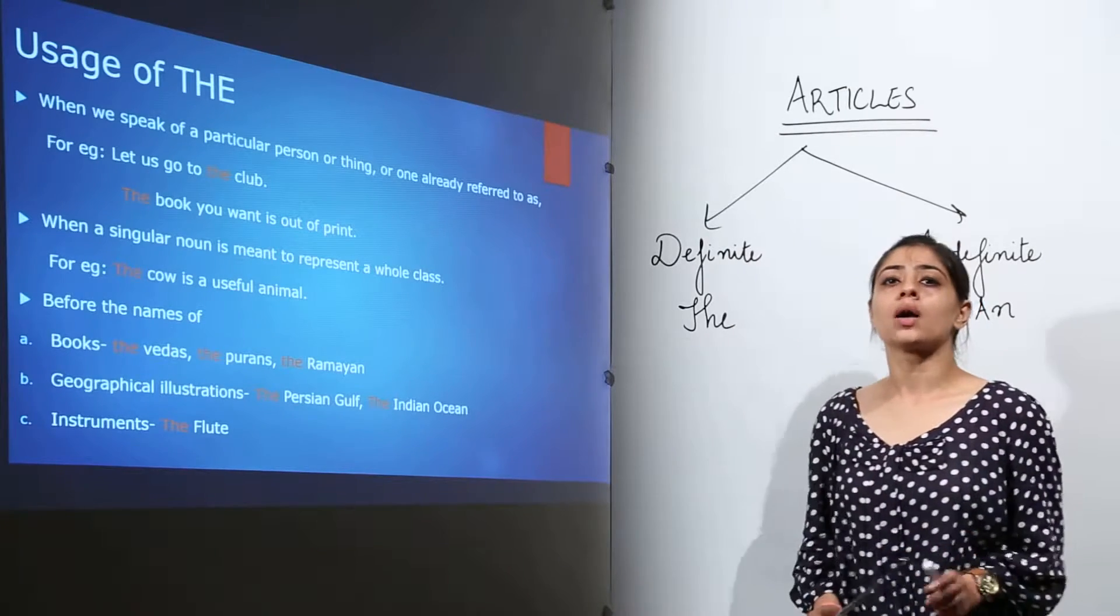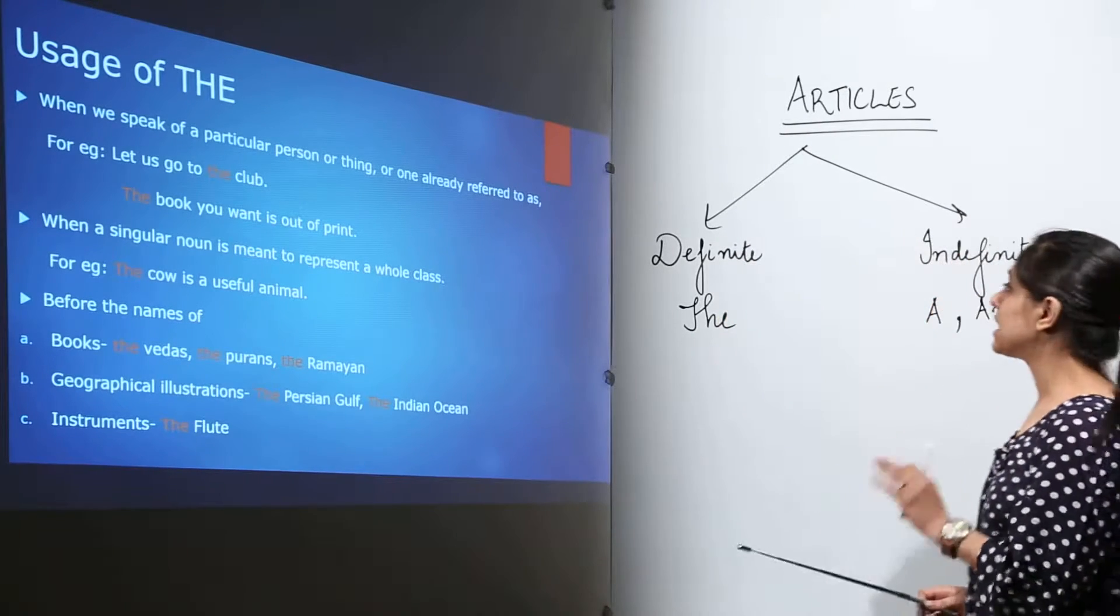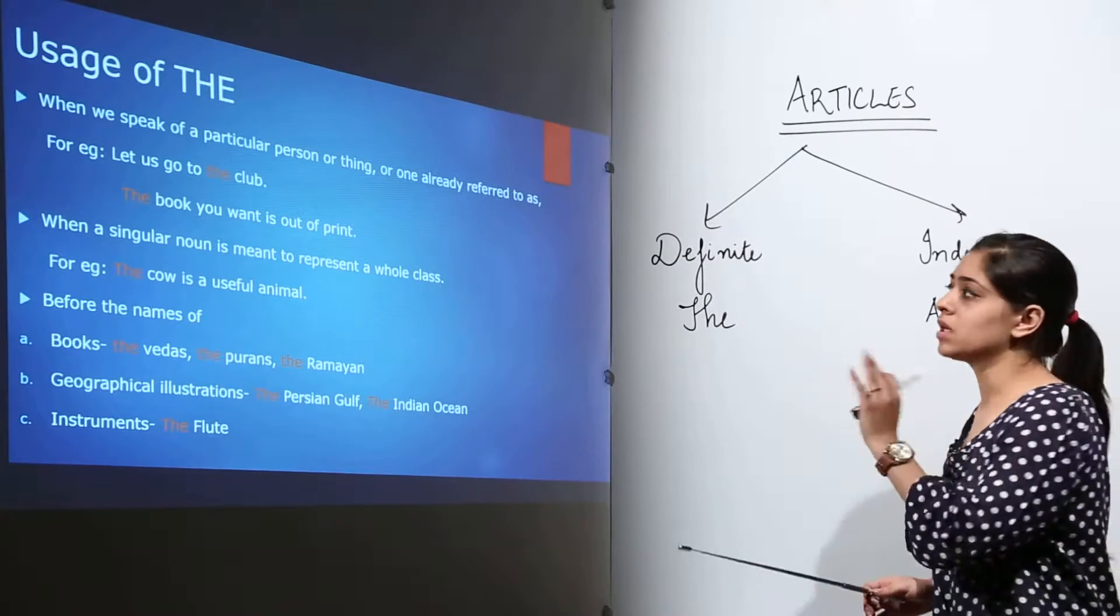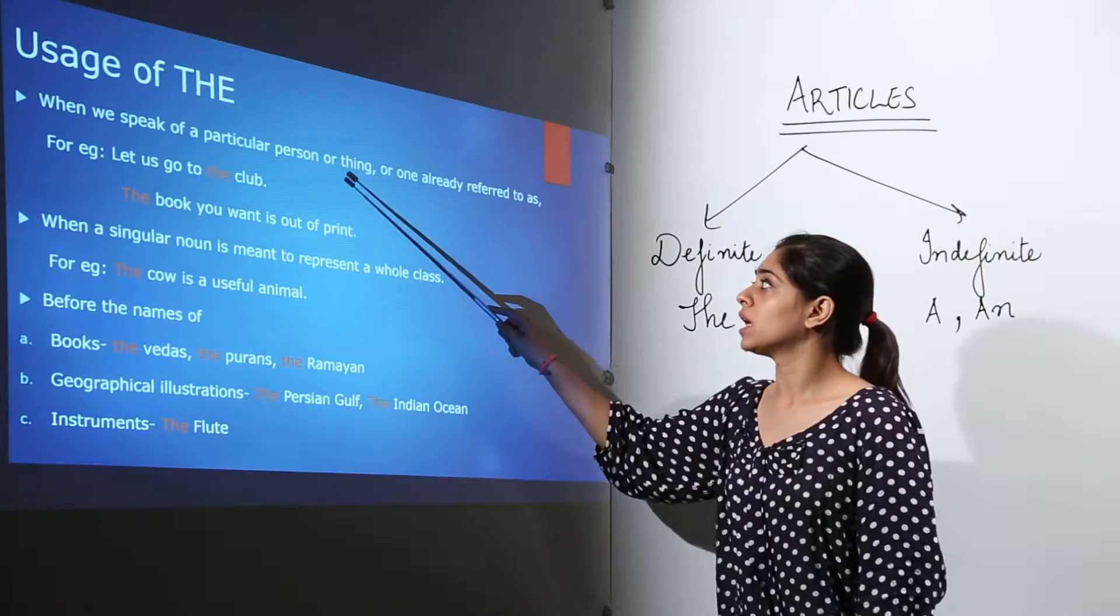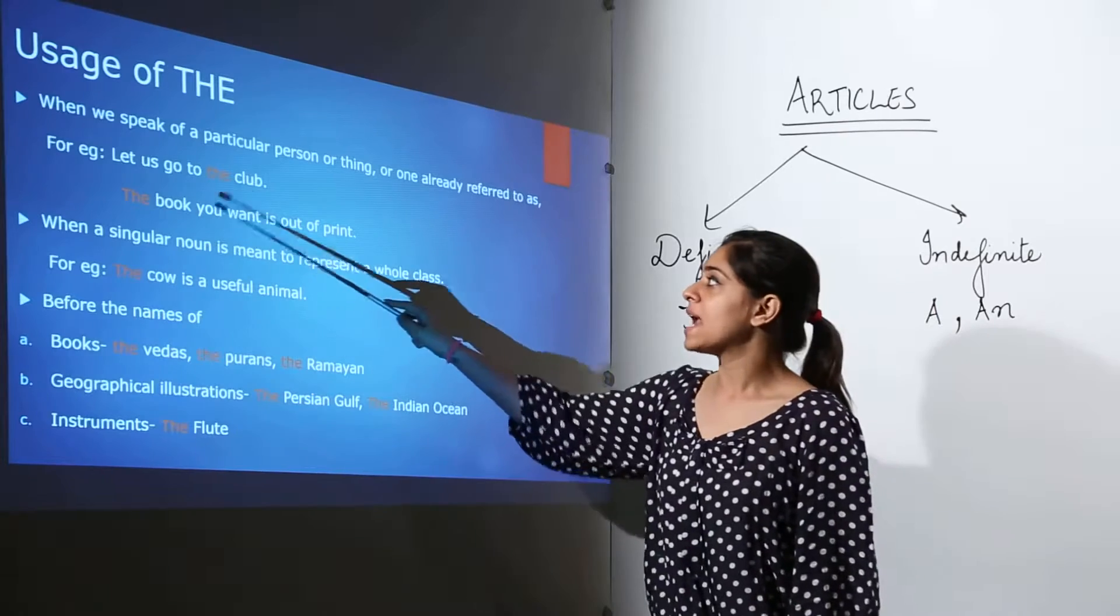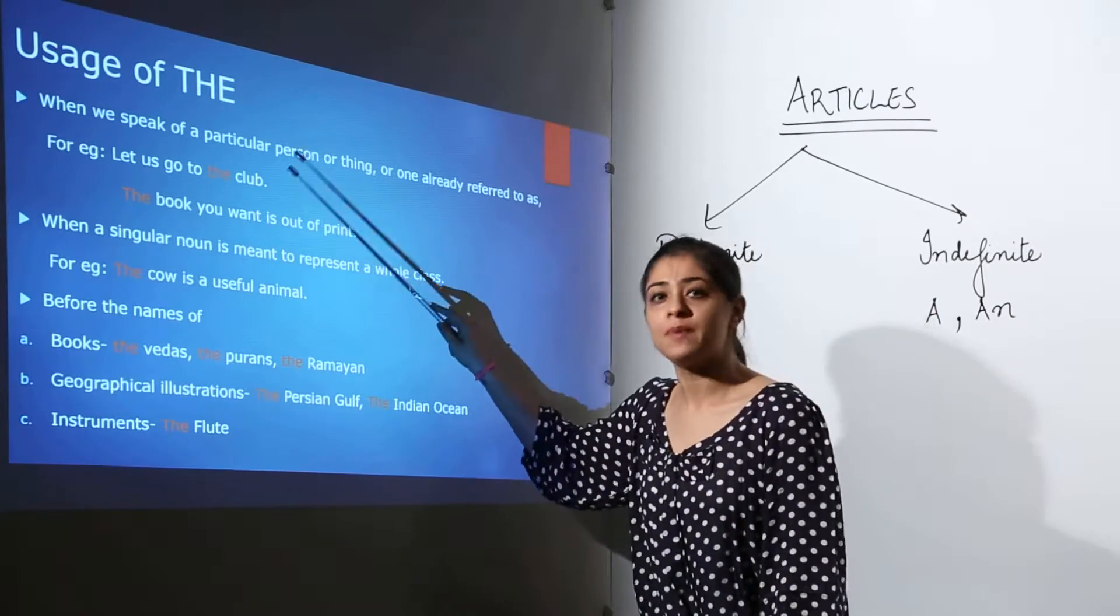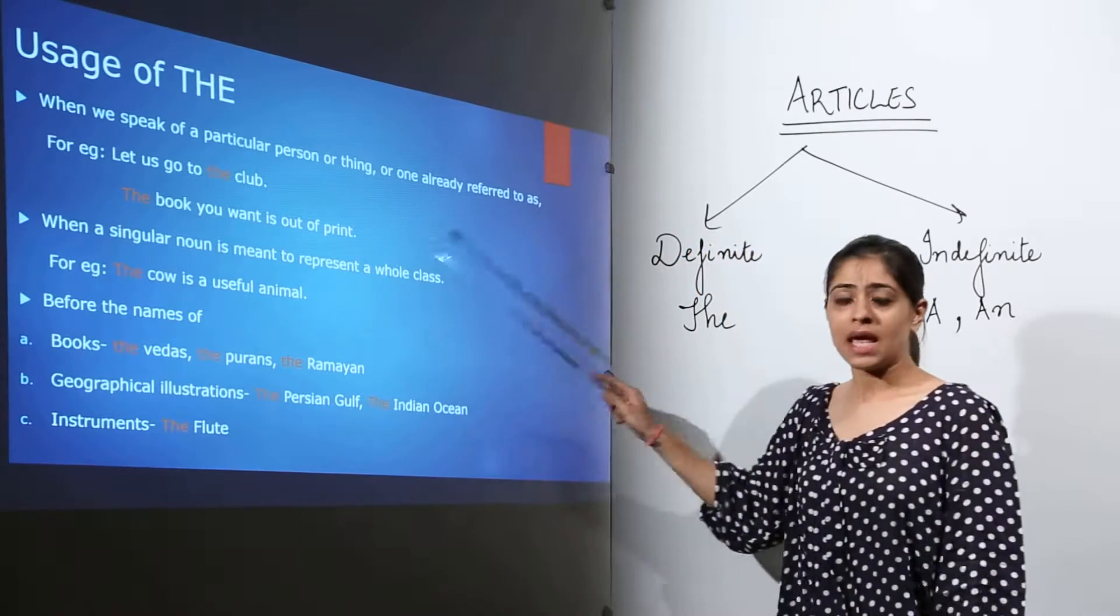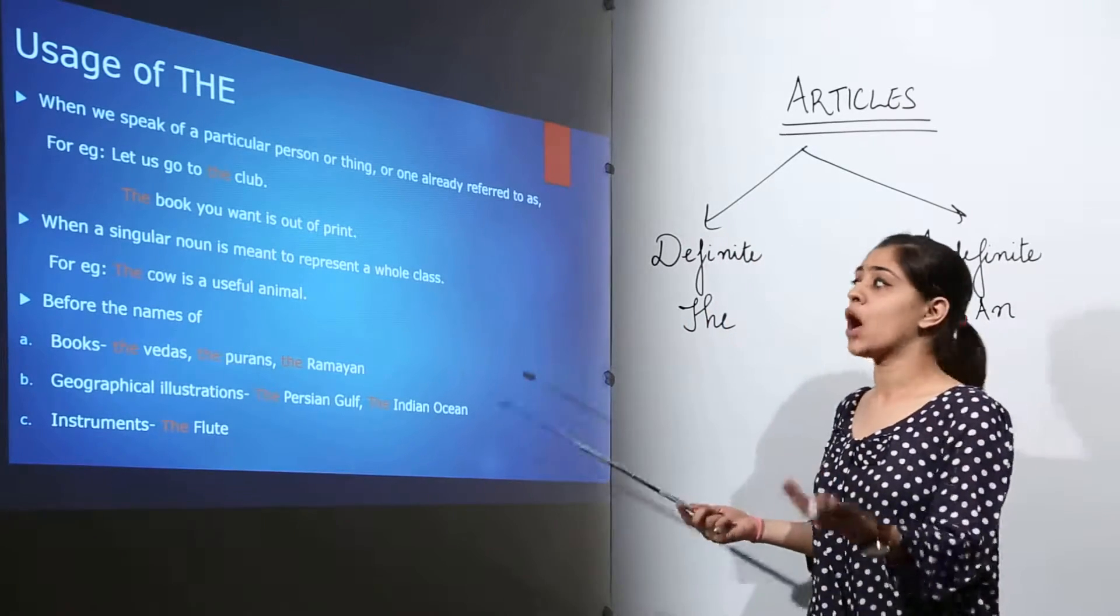Now we're going to talk about the usage of the word the. As it is a definite article, we need to be very careful in using the word the. The rules apply when we speak of a particular person or thing or one already referred to. For example, let us go to the club. Now here we are talking about a particular place. The book you want is out of print. Here we are talking about a particular book that you require for your syllabi and it is out of print.